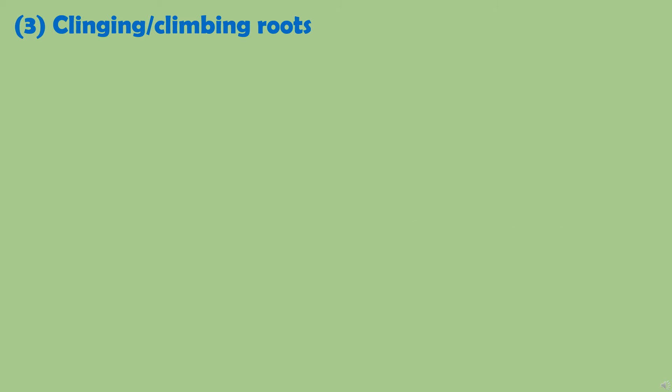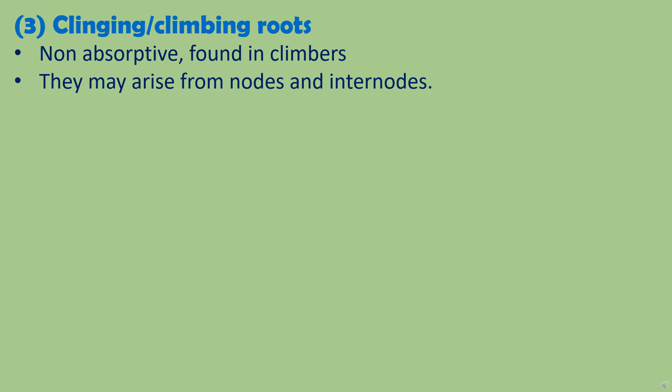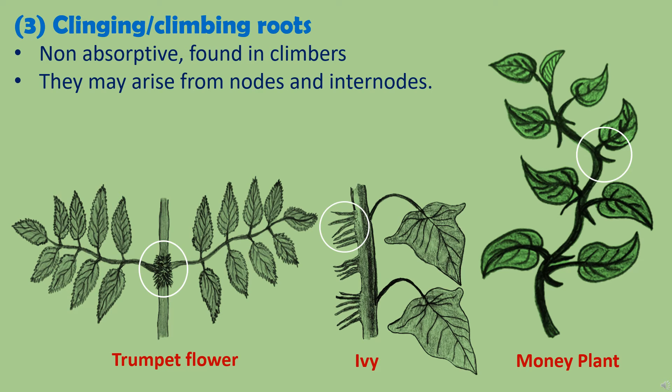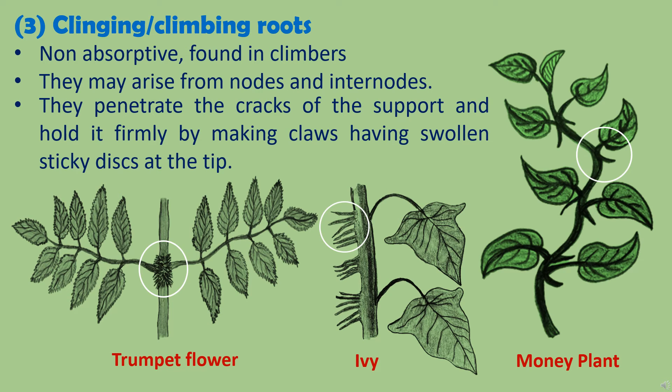The third category of modified adventitious roots are clinging roots. They are non-absorptive roots, meaning they are not used for absorption of water, but they are used by climbers to climb up a support. They may arise from the node and the internode — like in trumpet flower and money flower they arise from the nodal region, whereas in ivy they arise from both node and internode. These roots are thin and penetrate the cracks of walls and other supports, holding firmly by making a claw-shaped structure with a sticky disc at the tip.